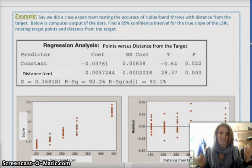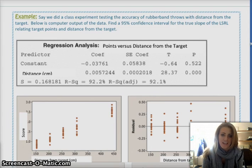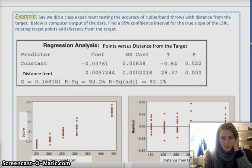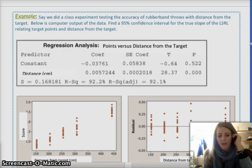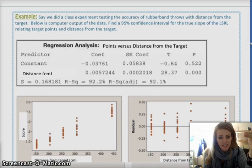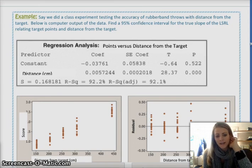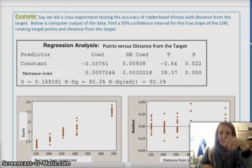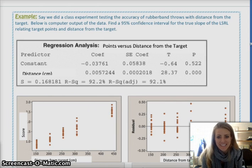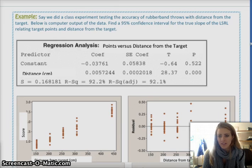Alright, let's try an example. So, say we did a class experiment testing accuracy of rubber band throws and distance from the target. Below is a computer output of the data, and it just so happened that in this case, as the distance from the target increased, the score actually also increased. So, I don't know what they were feeding those kids, but you know. Anyways, below is a computer output. So, it says find a 95% confidence interval for the true slope of the least squares regression line relating target points and distance from the target.